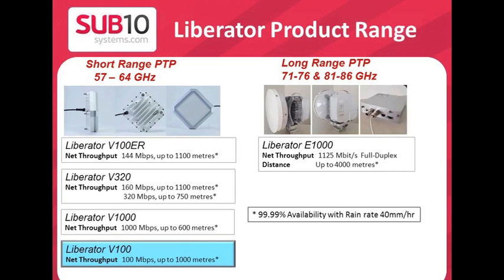Here we have our 60 GHz and 80 GHz product ranges. You can see the new Liberator V100 slotting into the 60 GHz range — that's in the short range P2P links. We have the existing Liberator V100 ER, which gives about 144 Mbit per second. We have the Liberator V320, which is very well known, up to 320 Mbit per second. And the Liberator V1000, up to a gigabit. The Liberator V100 slots into this lineup and brings a number of new features and a very compelling price point.